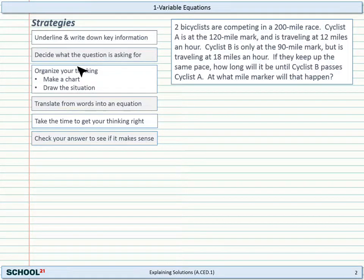Remember, while we do this problem, let's use our strategies over here. So first we'll be underlining. 2 bicyclists are competing in a 200 mile race. Cyclist A is at the 120 mile mark and is traveling at 12 miles an hour. So we'll remember that about Cyclist A. Okay, Cyclist B is only at the 90 mile mark, but is traveling at 18 miles an hour. Okay, so that's for Cyclist B there. If they keep up the same pace, how long will it be until Cyclist B passes Cyclist A and at what mile mark will that happen?